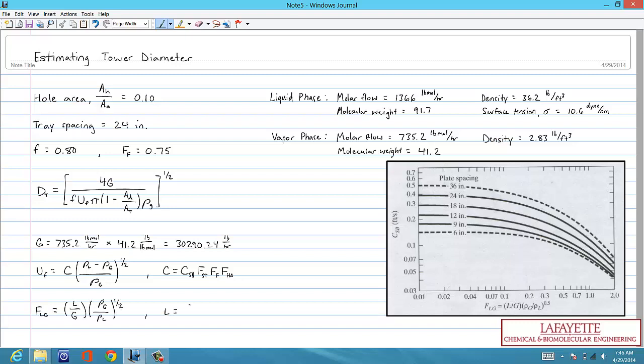We can calculate the liquid mass flow rate l in the same manner that we saw for g. By multiplying the given molar flow rate by the molecular weight, g is the same value that we calculated before, and again we can plug in the given densities. This gives us an f sub lg value of 1.156.